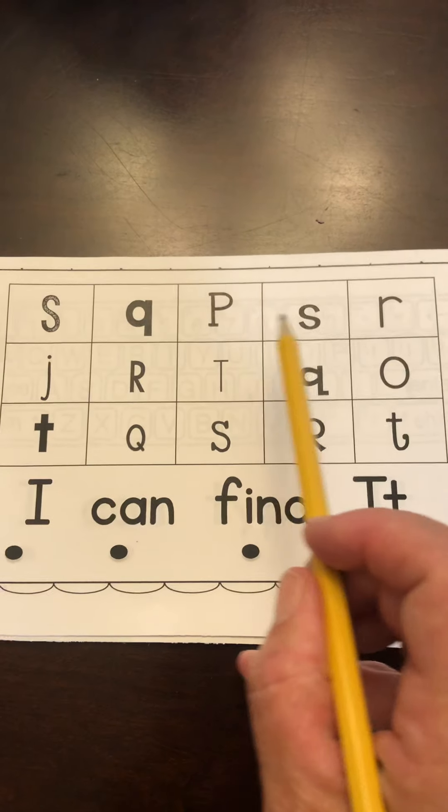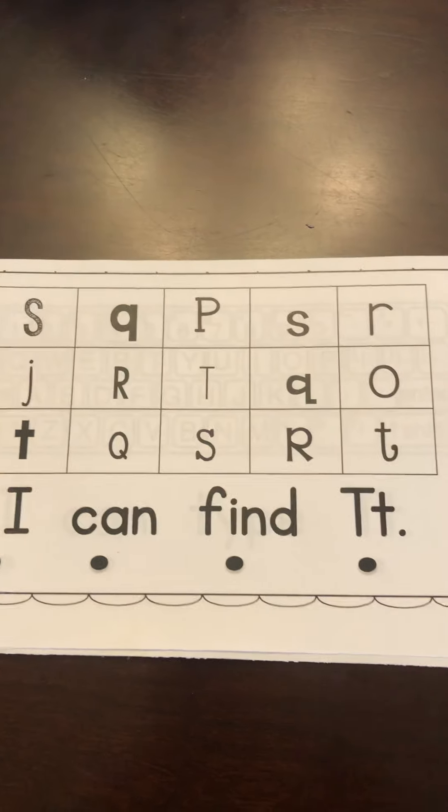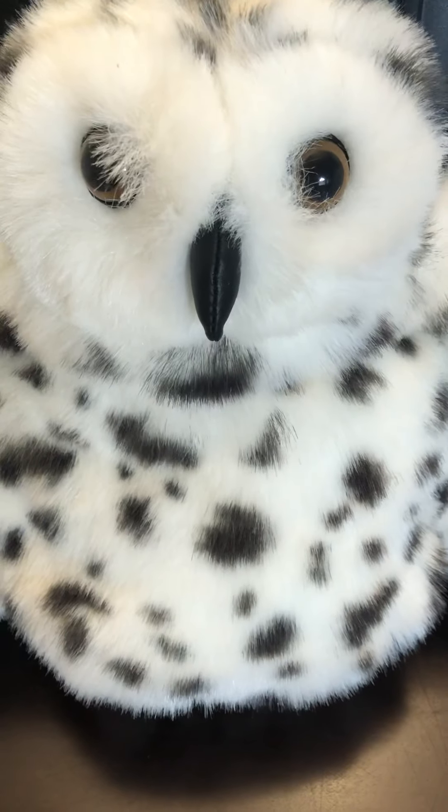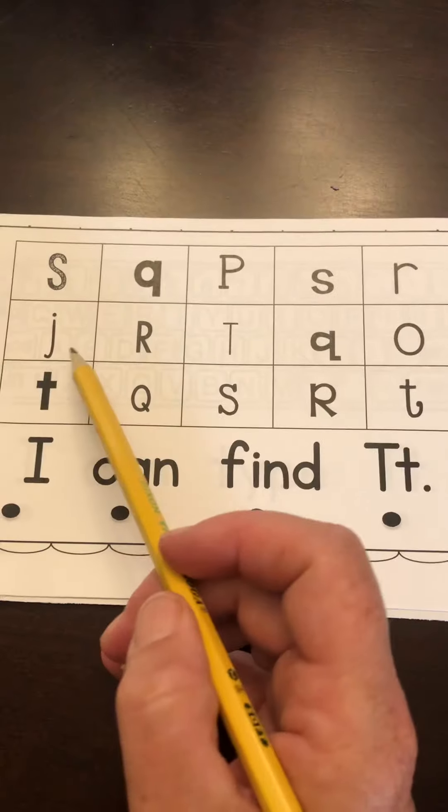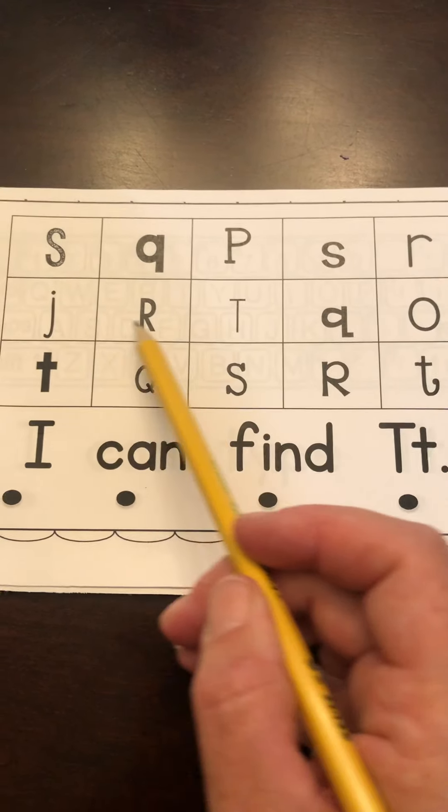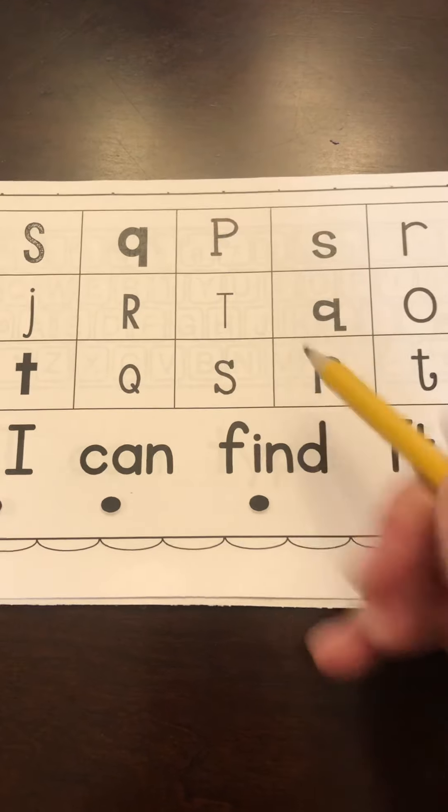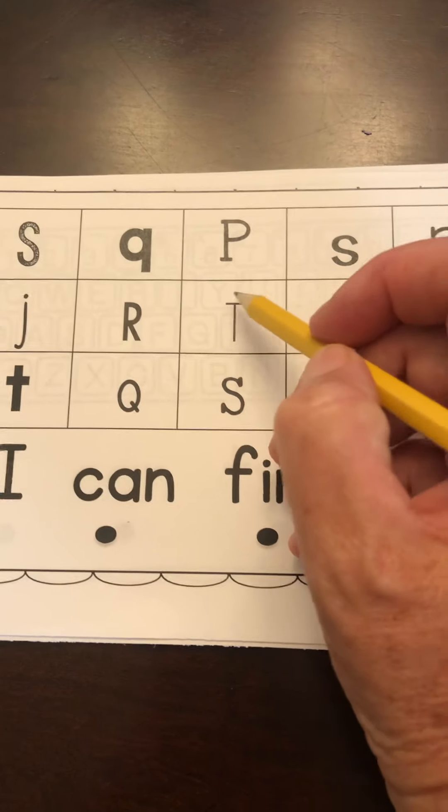Now let's look for some T's. Look in the first row. Do you see a T? No, Aqualo doesn't see any T's. Let's look on the next one. There's a T.